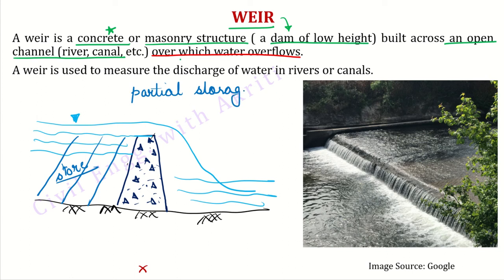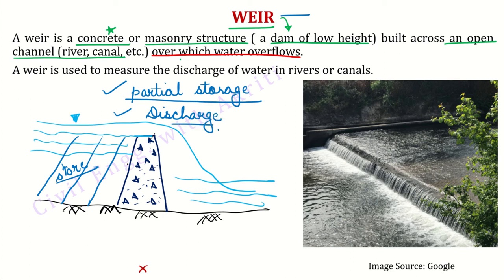A weir is used to measure the discharge of water in rivers or canals. Aur ek aur purpose kya ho jaata hai weir ka? Partial storage ke ilaawa, yeh aapko discharge measure karke dega — ki kitna discharge hai aapke is particular river mein. Toh yeh bhi hum weir se measure kar sakte hain.